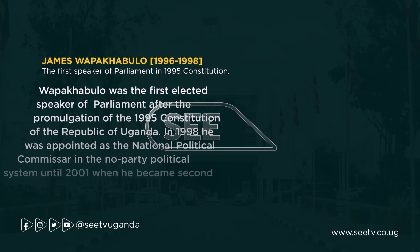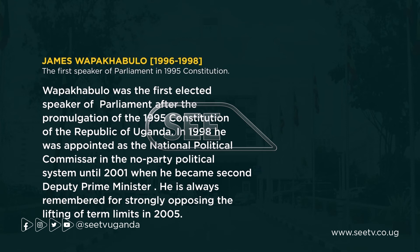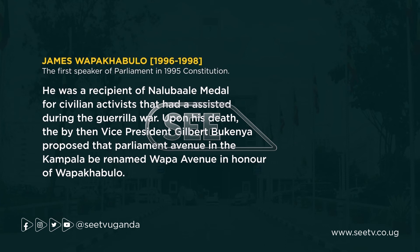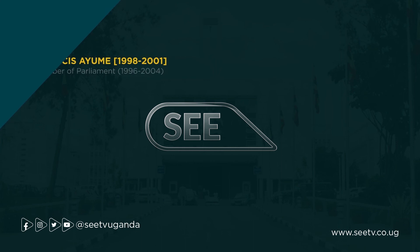James Wapakaburo served from 1996 to 1998. He was the first elected Speaker of Parliament after the promulgation of the 1995 Constitution of the Republic of Uganda. In 1998, he was appointed as the National Political Commissar in the non-political party system until 2001, when he became Second Deputy Prime Minister. He is always remembered for strongly opposing the lifting of term limits in 2005. He was a recipient of the Narubalem medal for civilian activists that had assisted during the guerrilla war. Upon his death, then Vice President Gilbert Bukenya proposed that Parliament Avenue in Kampala be renamed Wapa Avenue in honour of Wapakaburo.